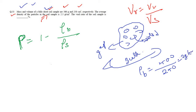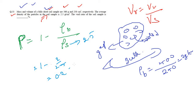Bulk density is 2 g/cm³, and density of solid particles is given as 2.5 g/cm³. So porosity = 1 − (2 / 2.5) = 1 − 0.8 = 0.2, which is 20 percent.